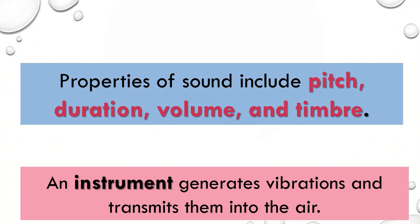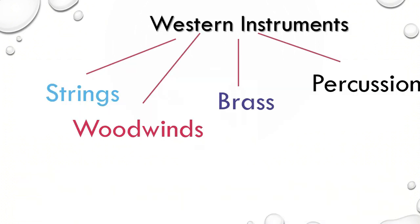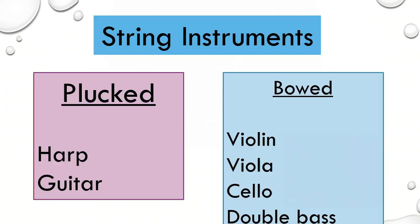Each instrument that we're going to talk about makes a sound because something vibrates. That might be different depending on the instrument family we're talking about, but something has to vibrate to create the sound. Western instruments — meaning instruments we talk about here in the United States — are split up into four categories: strings, woodwinds, brass, and percussion.